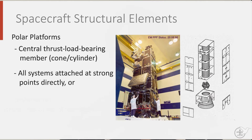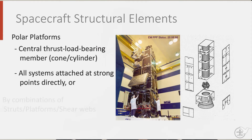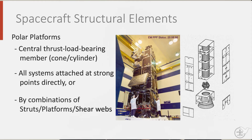All loads from the launch vehicle are transferred through this cylinder. And all systems within the spacecraft, such as the measuring equipment, are attached to this cylinder, either directly at strong points or by means of struts, platforms, and shear webs. An example of such a polar platform spacecraft is the MVISAT satellite, which has a cylindrical shell, as you can see here.